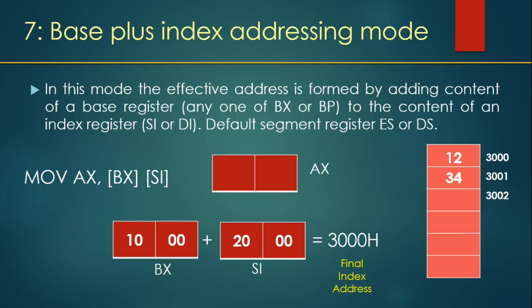Next is base plus index addressing mode. In this mode, the effective address is formed by adding the content of a base register — BX or BP — to the content of an index register — SI or DI. The default segment register is DS or ES. For example, if BX has 1000h and SI has 2000h, their values are added giving a resultant offset address of 3000h. From that memory location, a 16-bit data value is copied to the AX register.